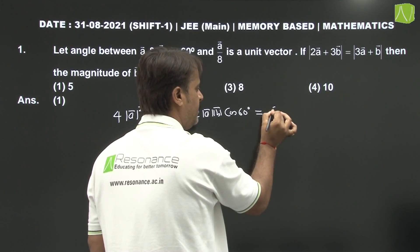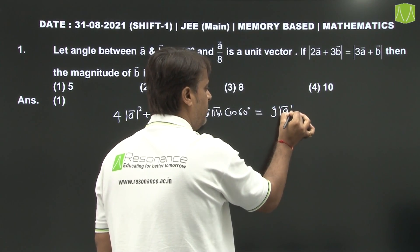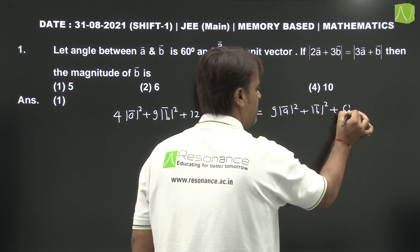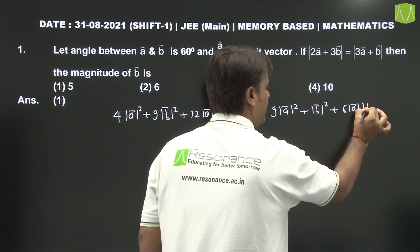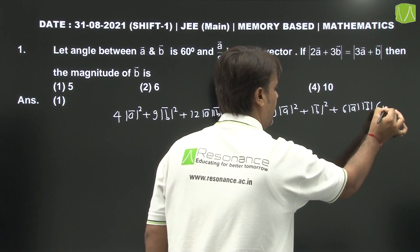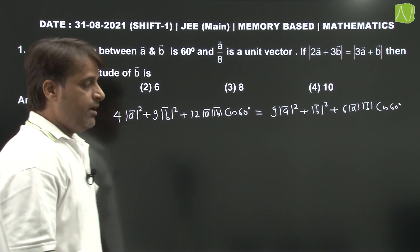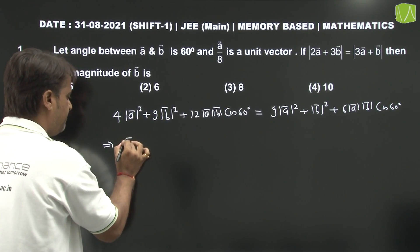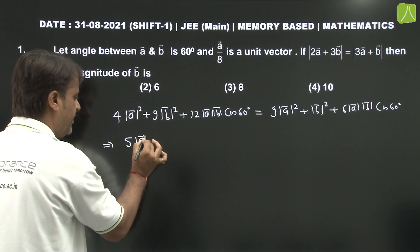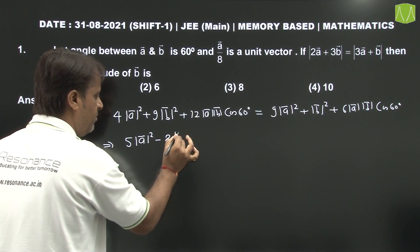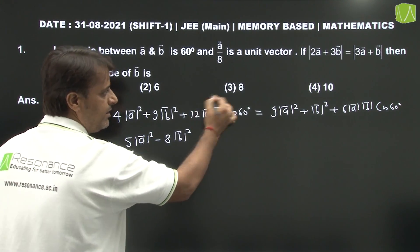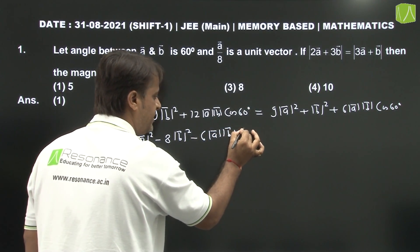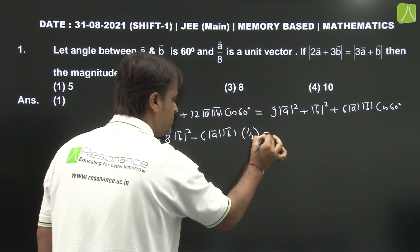Similarly, on the right side: 9 mod of A vector squared plus mod of B vector squared plus 6 mod of A vector times mod of B vector, angle between vector A and vector B is 60 degrees. This implies 5 mod of A vector squared minus 8 mod of B vector squared minus 6 mod A vector mod B vector cos theta equals 1/2, which equals 0.